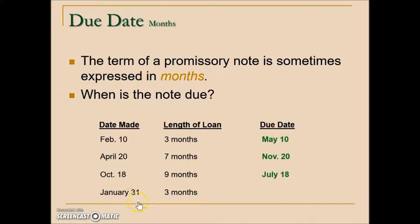If we have a date at the end of the month and the loan term is also in months, you still add the months, but be careful. Adding three months to January 31st goes January, February, March, April. We might want to say April 31st, but April only has 30 days. So instead, we put April 30th — the last day of the month.